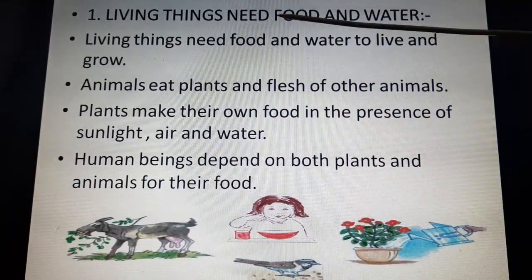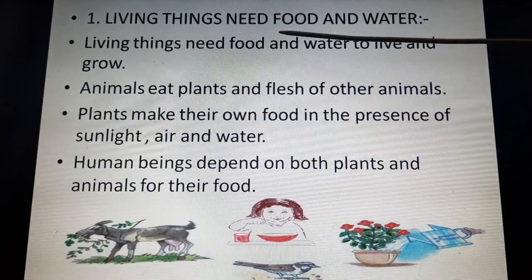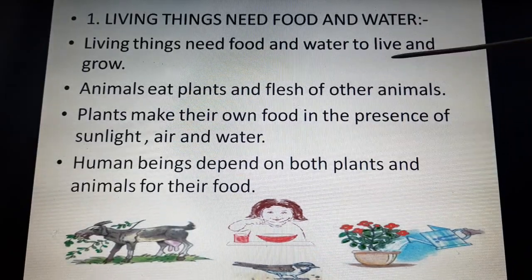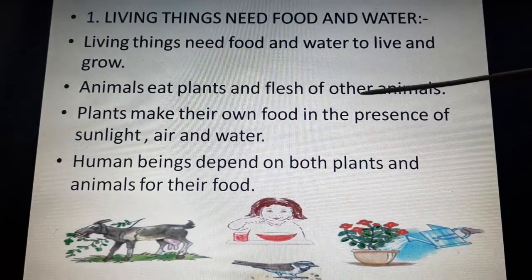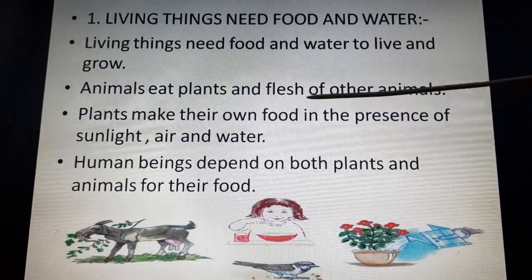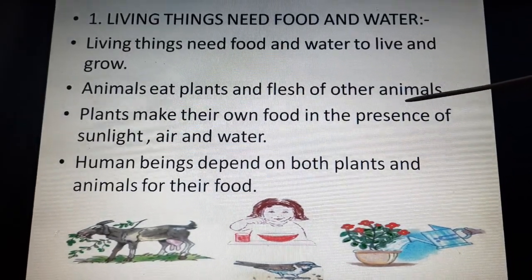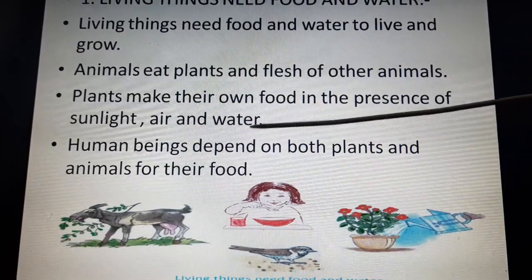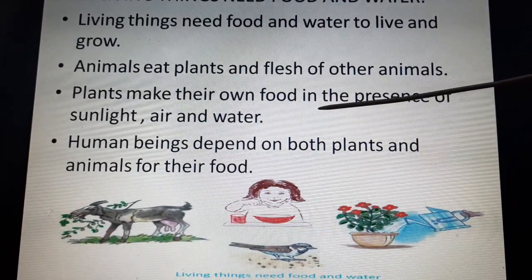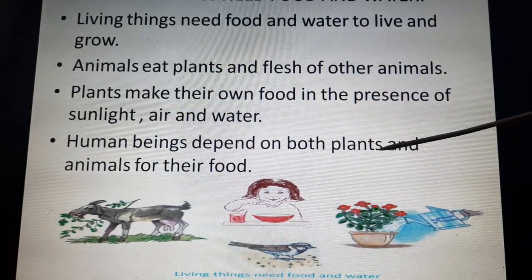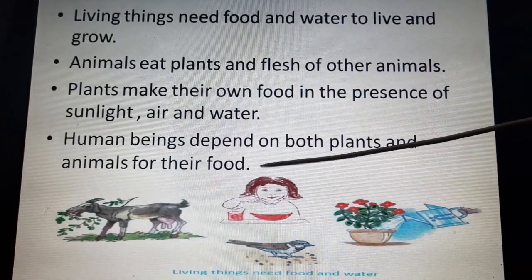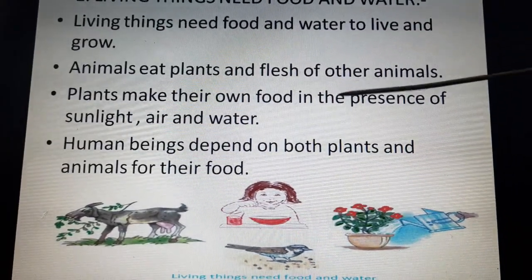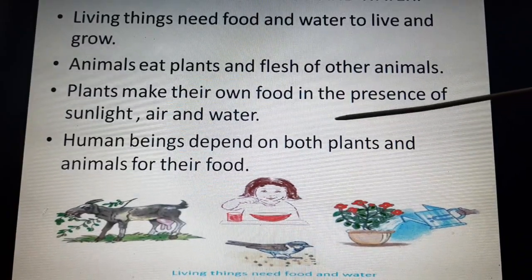First, living things need food and water to live and grow. We all need food and water. Animals also eat plants, and some animals eat the flesh of other animals. Plants make their own food in the presence of sunlight, air and water — that is called photosynthesis. Human beings depend on both plants and animals for their food. Non-living things like tables and chairs don't need food or water.